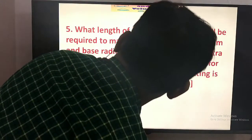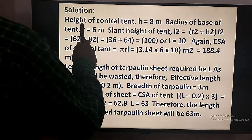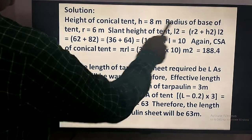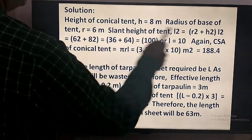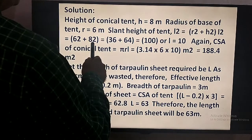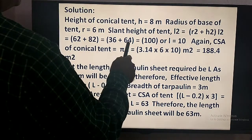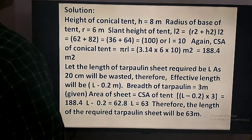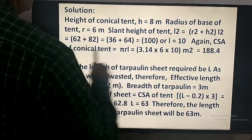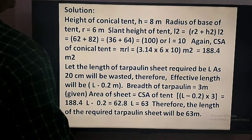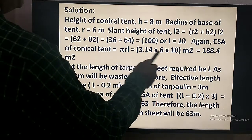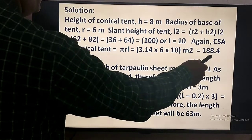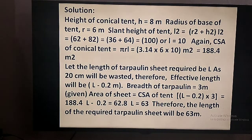The height is 8 m and base radius is 6 m. The slant height L equals the square root of 6 squared plus 8 squared, which equals the square root of 36 plus 64, which equals 100. So L equals 10 m. The curved surface area equals pi R L, which is 3.14 times 6 times 10, giving 188.4 square meters.